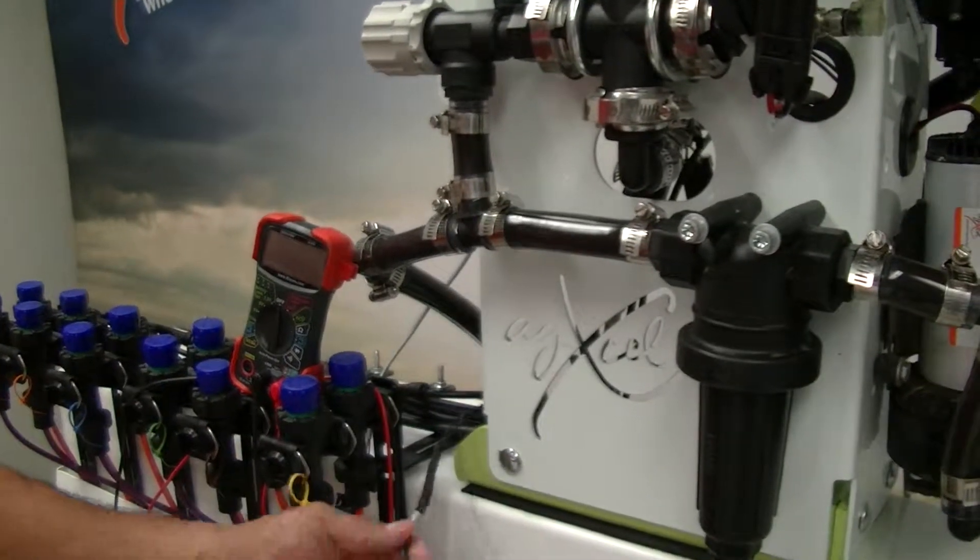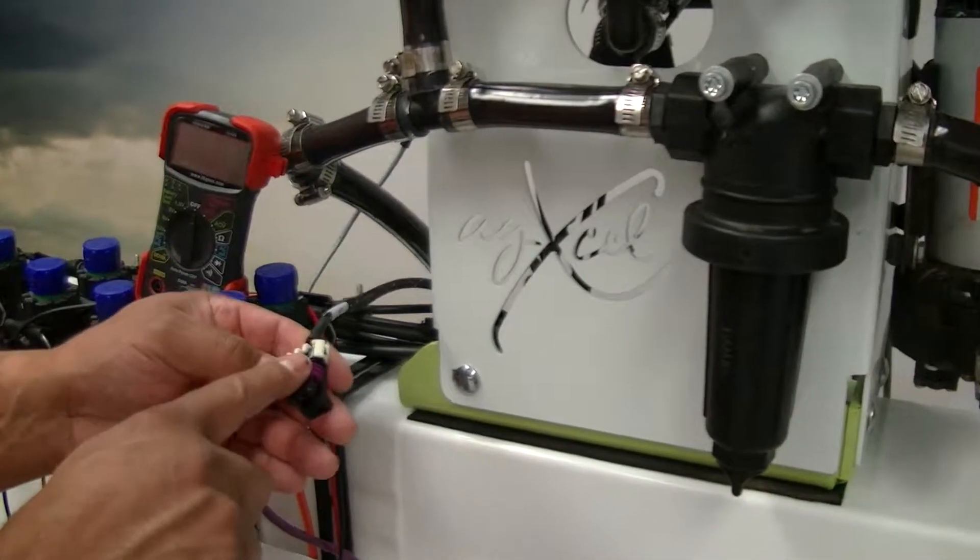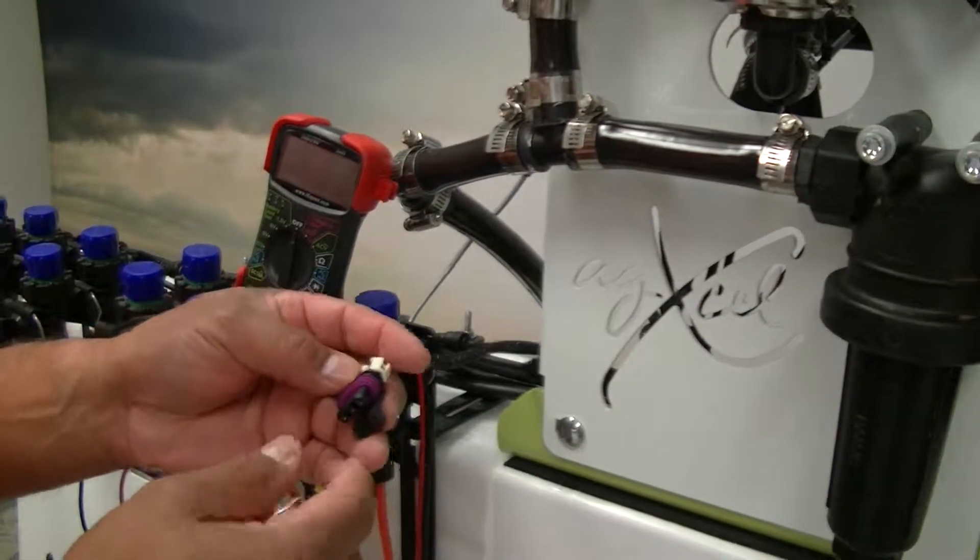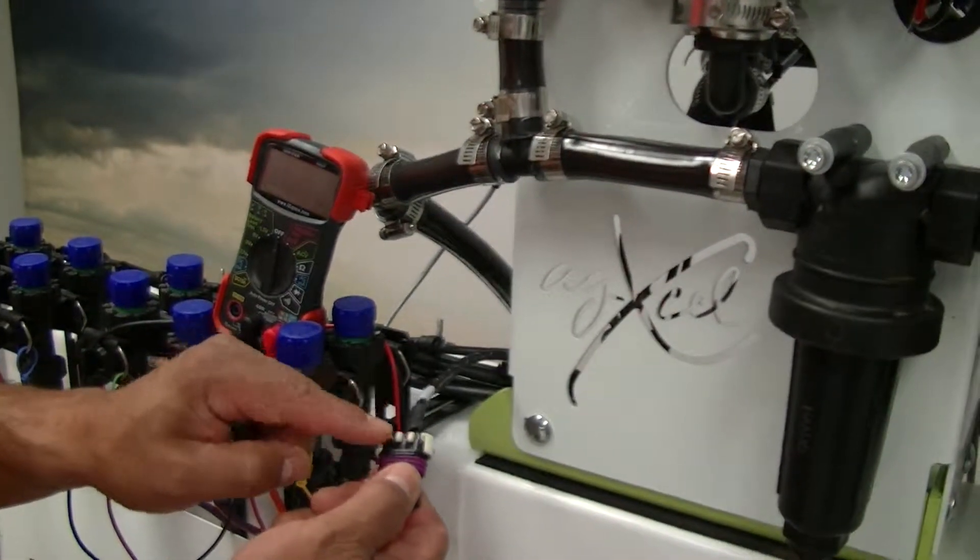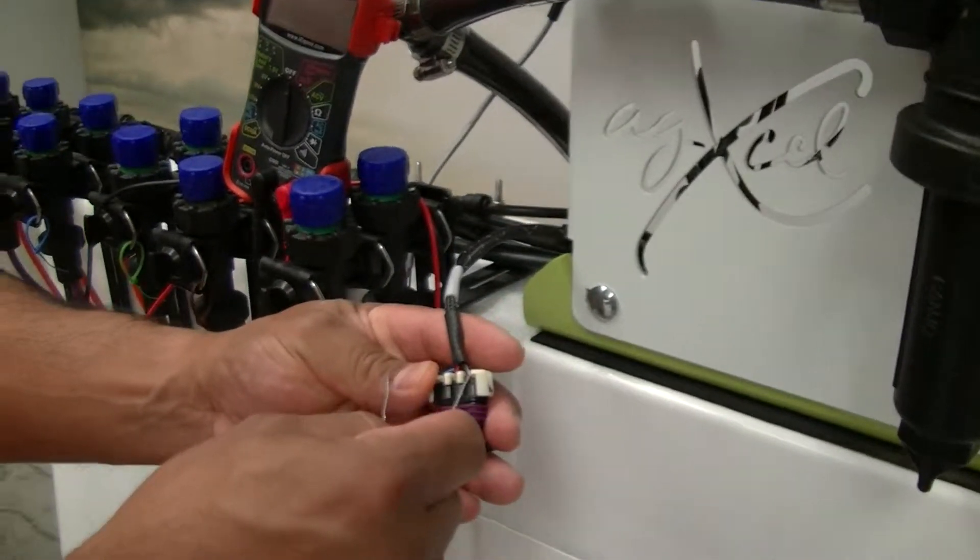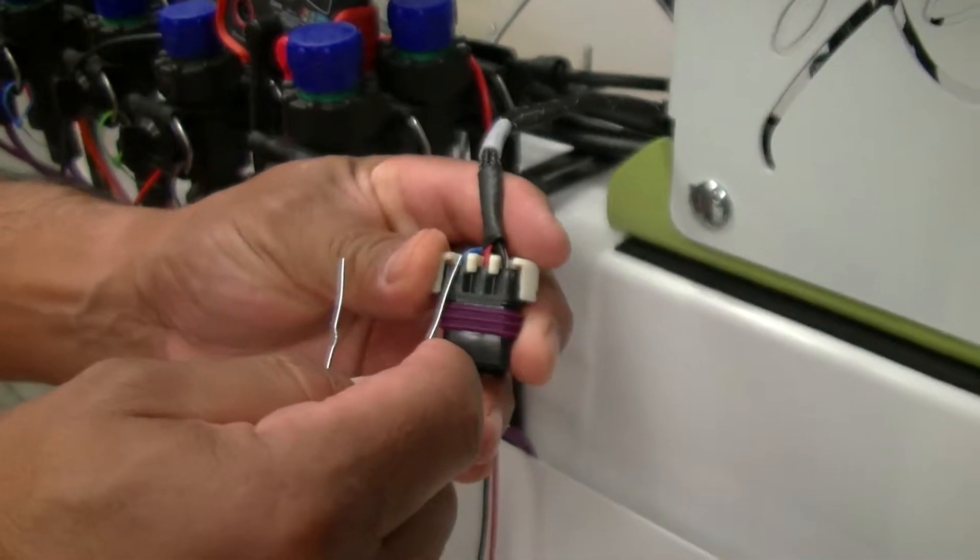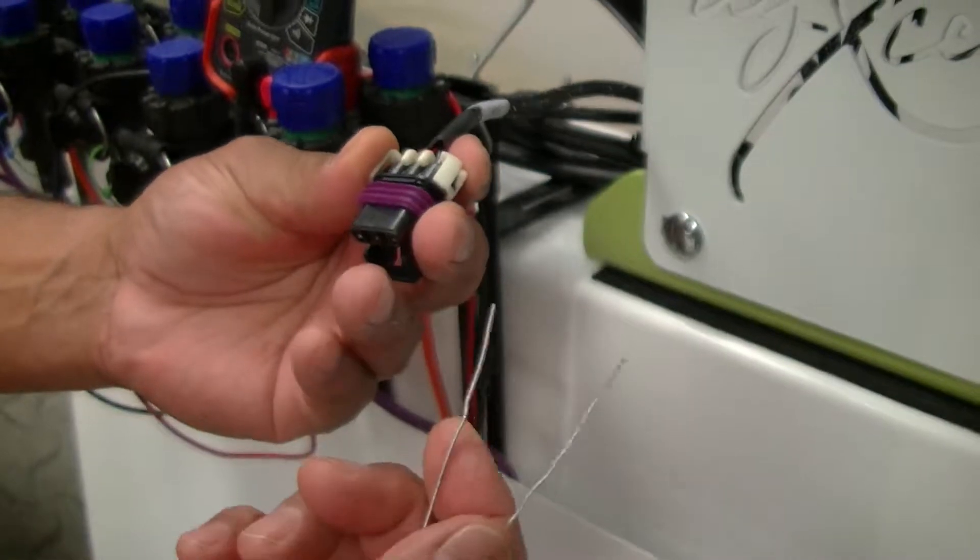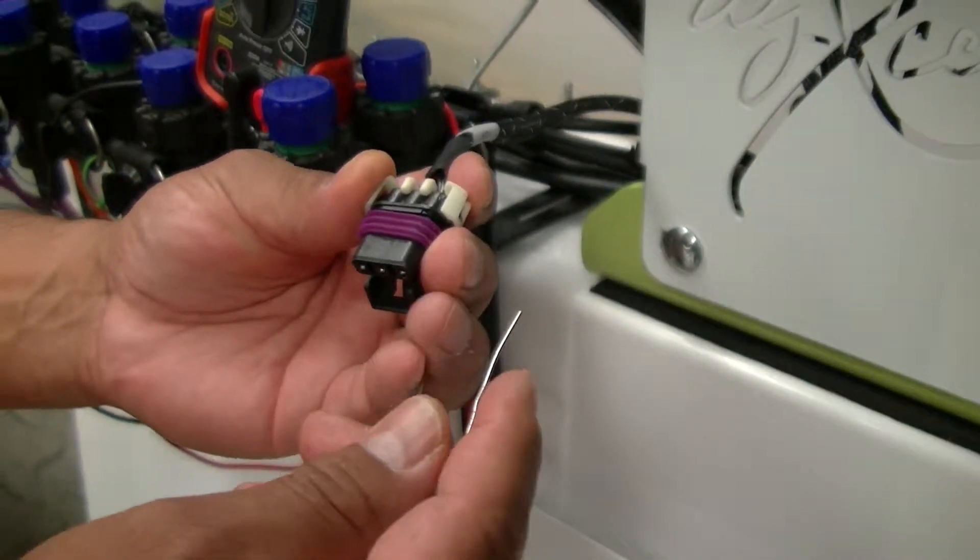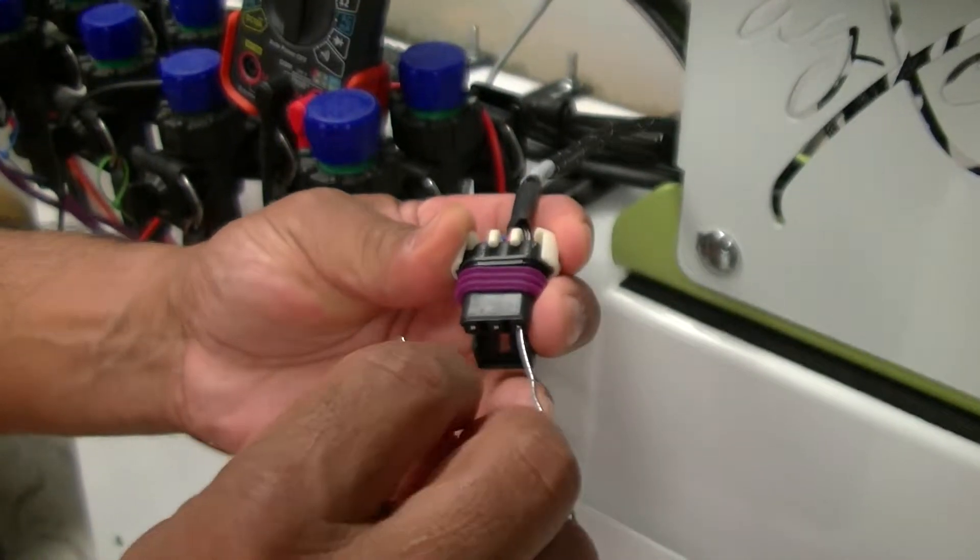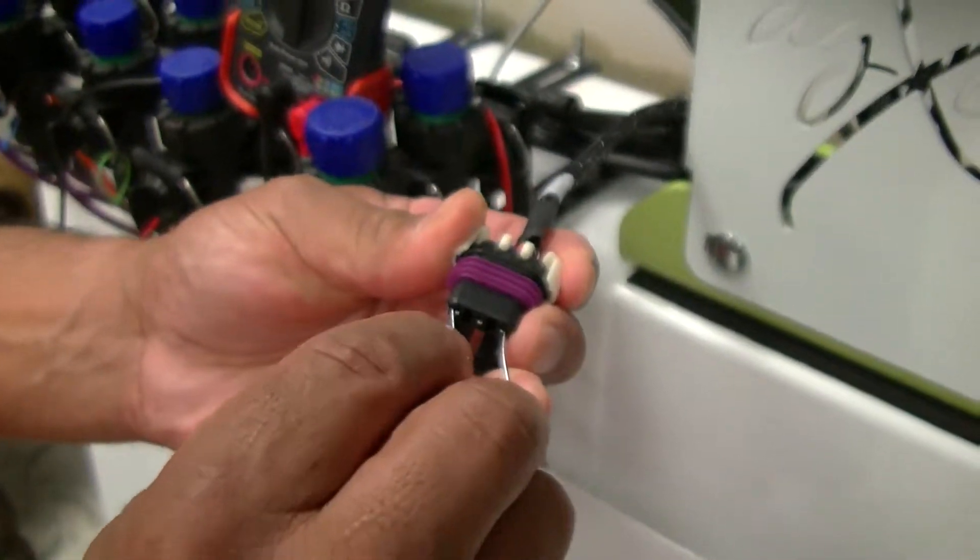Once we've validated that we're getting 12 volts from the harness, that means it's going all the way back to the controller and getting 12 volts. The next thing that we want to check is what we call a tap test. And what we're going to do is we want to tap the ground wire, the black wire with the blue wire. You can strip a wire and stick the ends in there or get a paper clip or some kind of metal clip here and you're going to stick it in the ground.